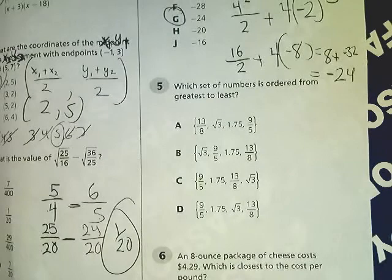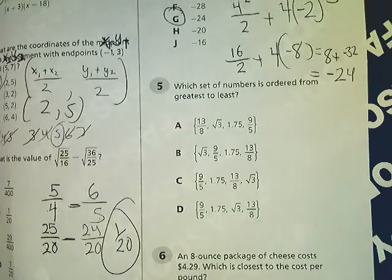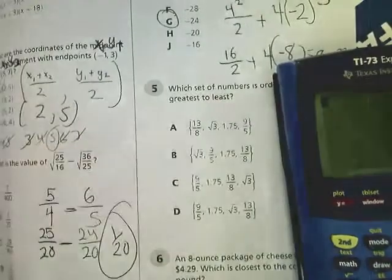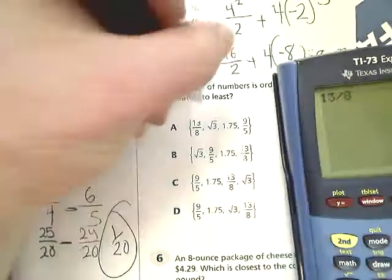Tennessee End of Course Algebra 1, question number 5. They want to order numbers from greatest to least. There's a few ways you can do this. Since they're generally all the same numbers, I'm going to convert them all into decimals.